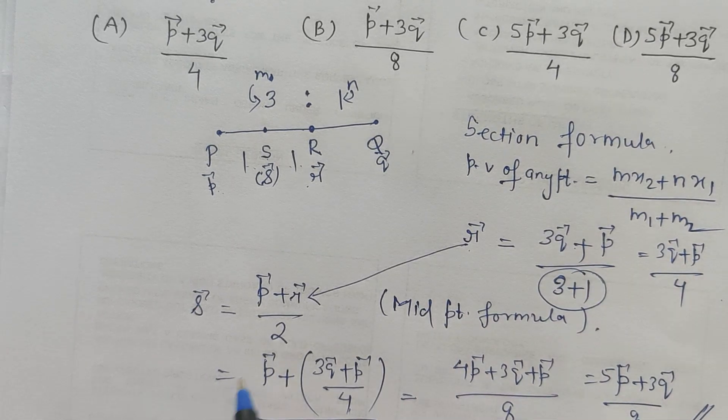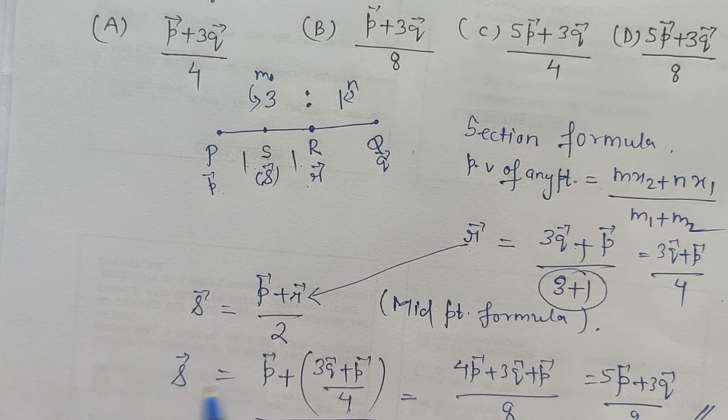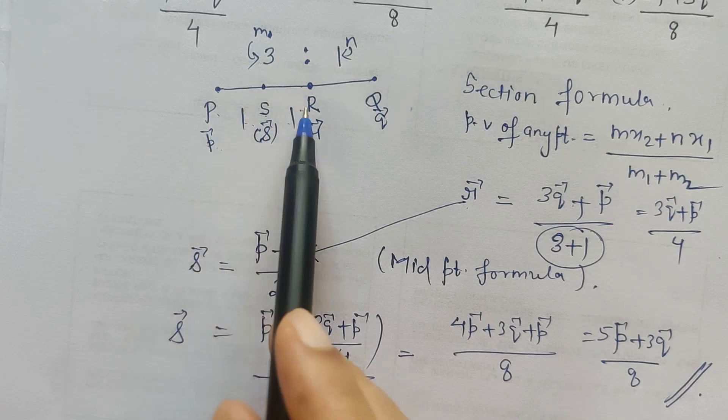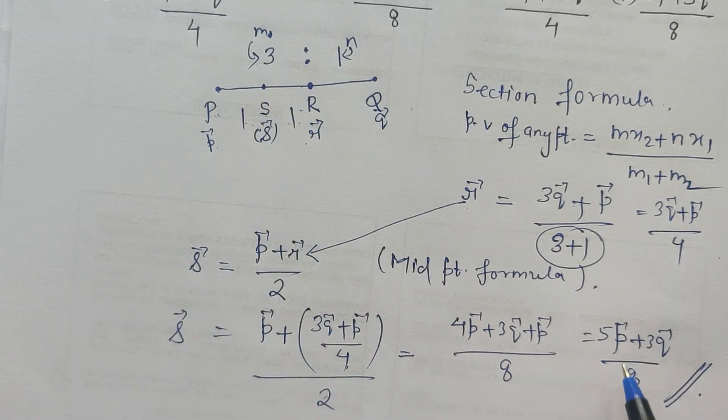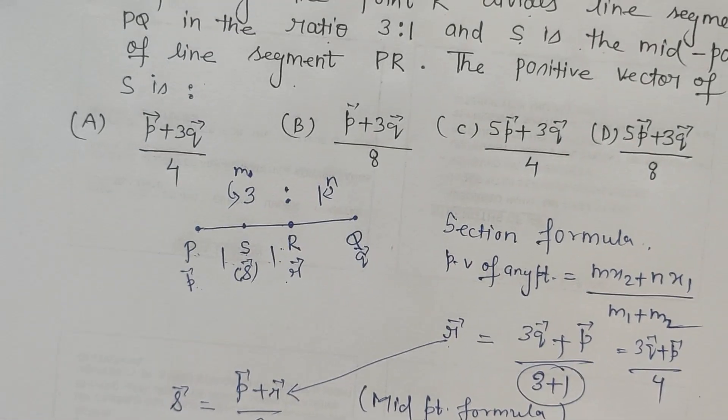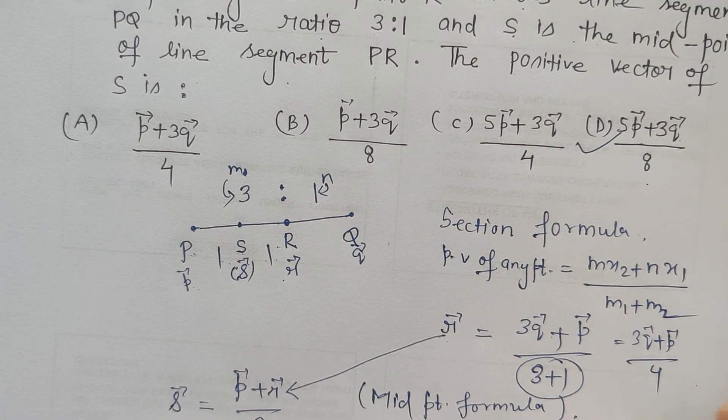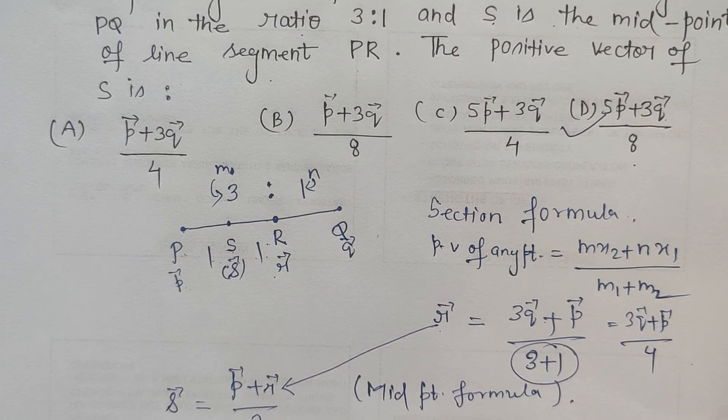So this is the position vector of the point S which divides the line segment PR in equal ratio. So 5P vector plus 3Q vector upon 8. So out of the 4 options which option is correct? Option D 5P vector plus 3Q vector upon 8. So this is how it is to be solved.